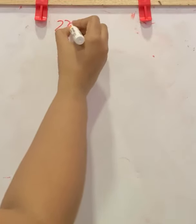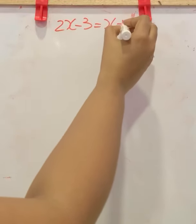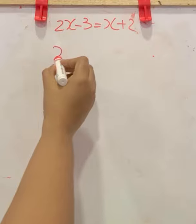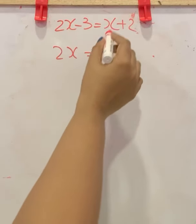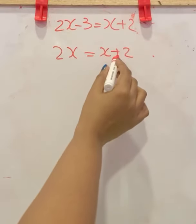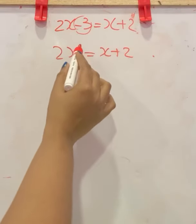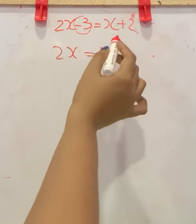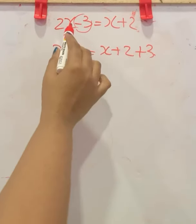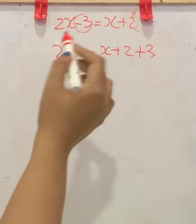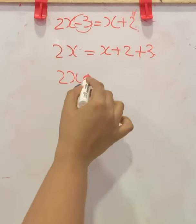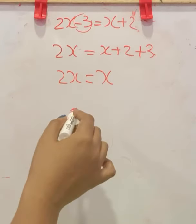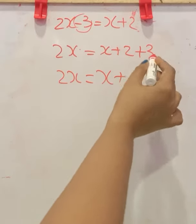Solve: 2x minus 3 is equal to x plus 2. I have two methods to solve this. Here we have 2x on the LHS, and x plus 2 already in RHS. I am taking minus 3 from LHS to RHS. When negative 3 goes to RHS it becomes positive 3. The sign of negative 3 changes. Now there are two constants: 2 and 3. You can add them: 2 plus 3 is 5.